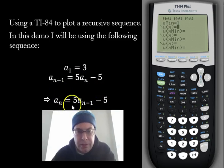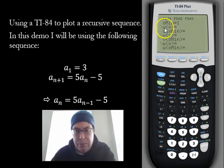So this is the sequence that we're going to work with, where a₁ is equal to 3. So putting in u(n), u(n) is going to be the sequence that we see here. So we're going to have 5 times...